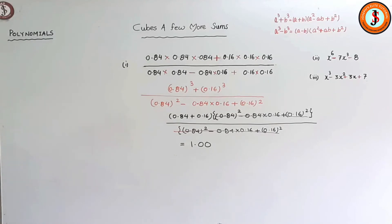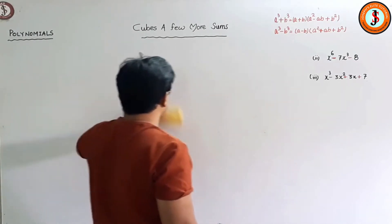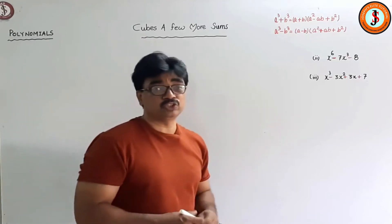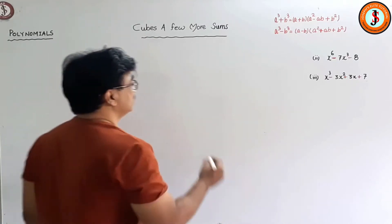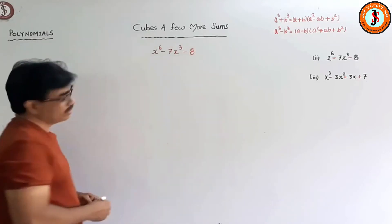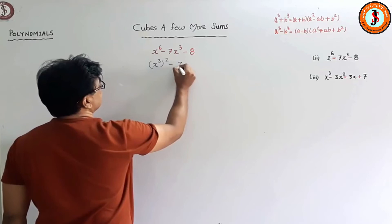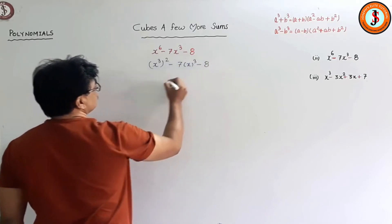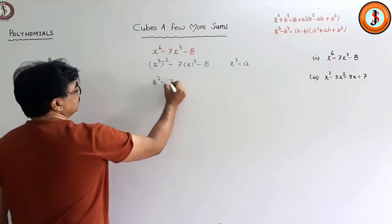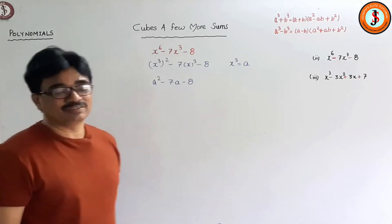Now let's go to another part where you have to convert what's given so that these formulas can be applied. These are good sums — a combination of two different parts of factorization. One is splitting the middle term. Consider x⁶ - 7x³ - 8. I can write this as (x³)² - 7x³ - 8. Let x³ = a, so this becomes a² - 7a - 8.